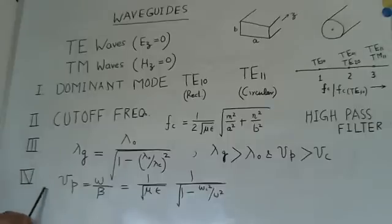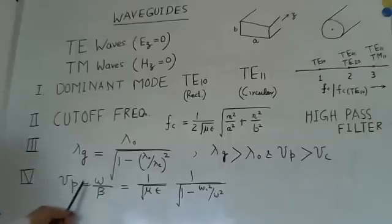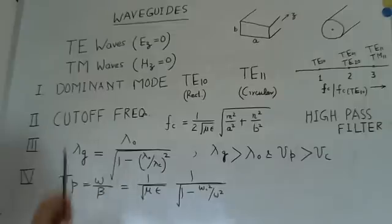Now, the vp, the phase velocity is given by omega by beta, radian frequency divided by beta, the propagation constant. This will be written as 1 over mu epsilon, 1 over 1 minus omega_c squared over omega squared.